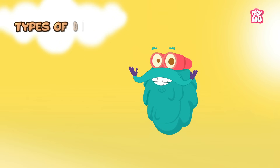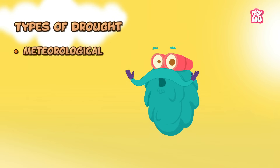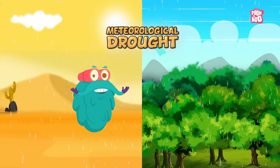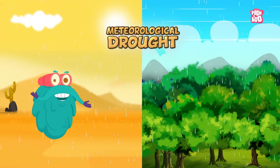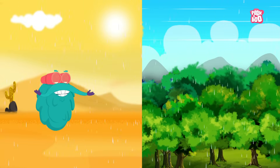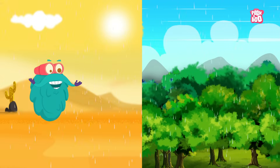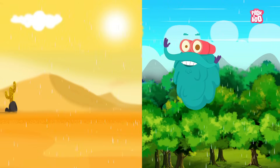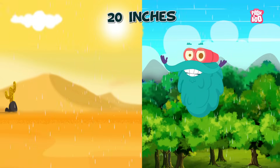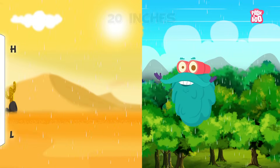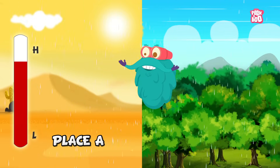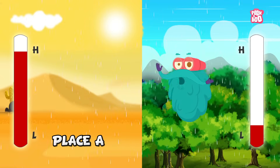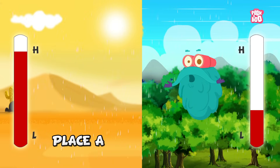Droughts can be classified into four different types. The first is Meteorological Drought. This kind of drought is specific to different regions based on the weather. For example, 20 inches of rainfall in a year is normal for place A, but the same amount could be very less for place B.